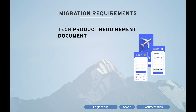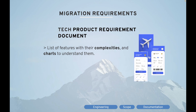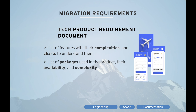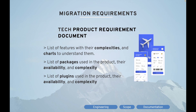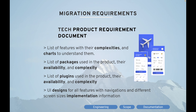Then there is the tech product requirement document, prepared by a technical or engineering manager. It should contain a list of features with their complexities and charts, list of packages and their availability and complexity, list of plugins and their availability and complexity, and UI designs for all features with navigations and different screen size implementations — because your migrated app will run on various screen sizes.